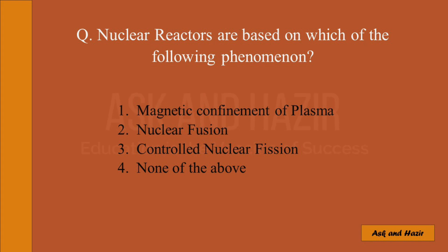Nuclear reactors are based on which of the following phenomenon? A: Magnetic confinement of plasma. B: Nuclear fusion. C: Controlled nuclear fission. D: None of the above.